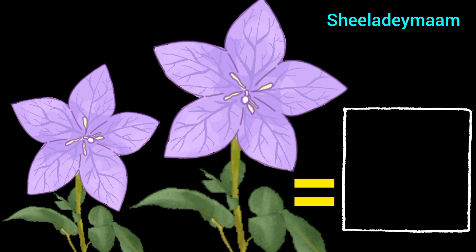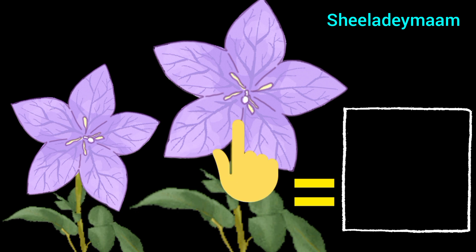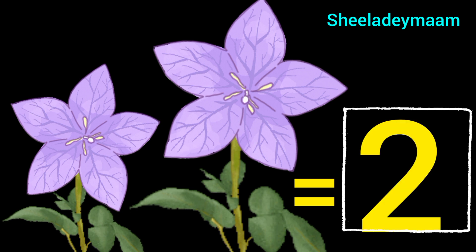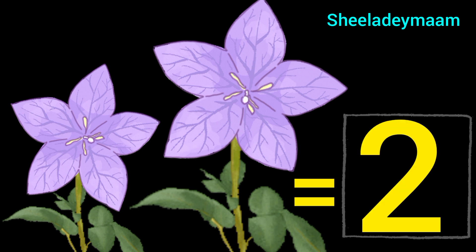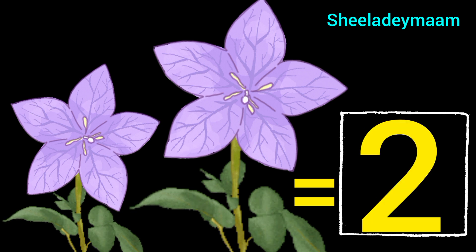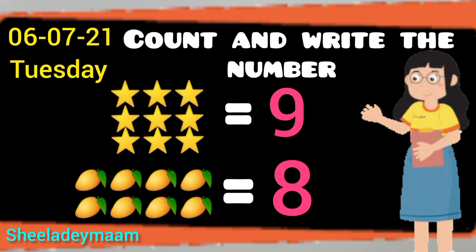The next picture is of flowers. Let's count. How many flowers are there? 1, 2. 2 flowers. So children, write number 2 in the box. And children, this is number 2.